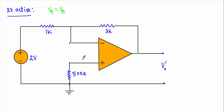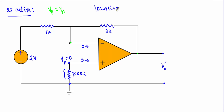Due to negative feedback, the current through the non-inverting terminal will be 0 and the current through the inverting terminal will also be 0. Since no current flows through the 500 Ω resistor, there is no voltage drop across it, so VP equals 0. This non-inverting terminal is virtually grounded, and the circuit acts like an inverting amplifier.